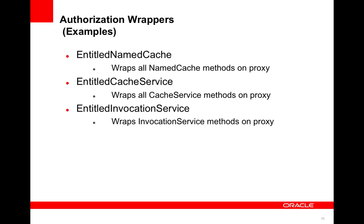We've also added new places you could wrap. Previously you had no way of wrapping an invocation service, so you could do authorization for a named cache, but you had no way of doing it for an invocation service, and also you could not do it for the cache service. You could do it on a named cache operation basis, but you couldn't do it for a cache service, allowing somebody to get a cache in the first place.